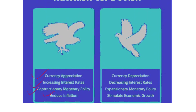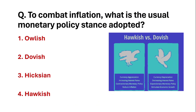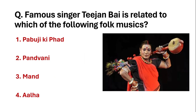Whereas in dovish monetary policy, the currency depreciates and interest rates are decreased. Hawkish and dovish monetary policies are often asked for their differences in exams.